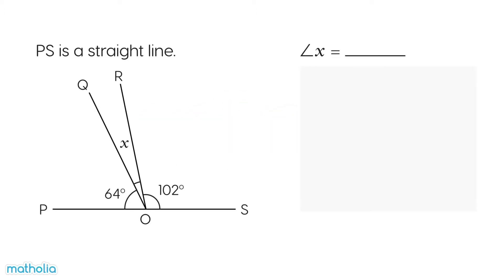Let's find the unknown angle. PS is a straight line. We need to find angle X.